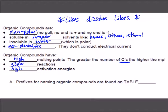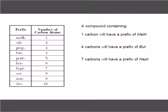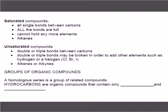Prefixes for naming organic compounds are found on Table P. Meth, eth, prop, but, pent, hex, hept, oct, non, dec. One through ten. You do not have to memorize them. One carbon is going to have meth for its prefix. Four carbons would have but. Seven would have hept. We will use these over the next week or so, and you will have to be able to name semi-simple structures.